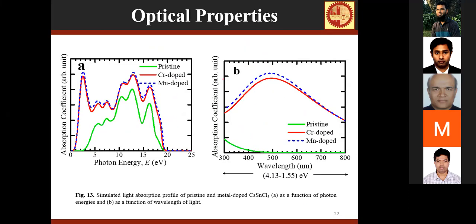The absorption coefficient as a function of photon energy is shown for the pristine sample and chromium and manganese doped samples. The pristine sample does not show absorption in the visible region — it absorbs in the ultraviolet range. However, the doped samples show an additional absorption peak in the low energy region, with large absorption in the visible region, making these materials useful for fabrication of visible-light optoelectronic devices.